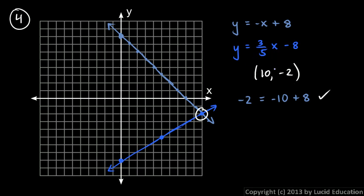And then try the other equation. Put in negative 2 for y equals 3 fifths times 10 minus 8. And let's see if that's true. So let's work this out. The 10 here and the 5 are going to reduce to a 2. So that's 3 times 2 right there. So that's 6 minus 8. And that's correct. Negative 2 is in fact 6 minus 8. So we've got it. 10, negative 2 is the solution.